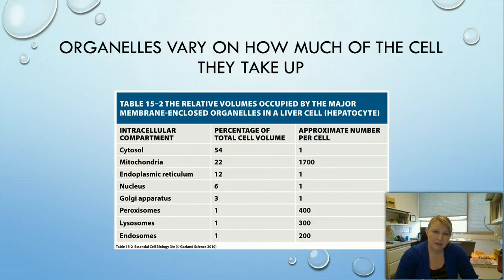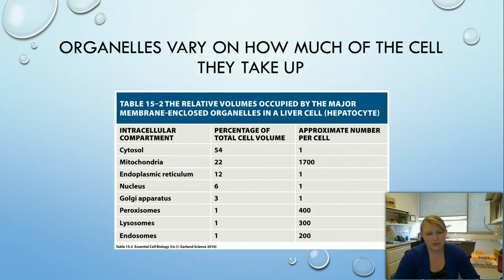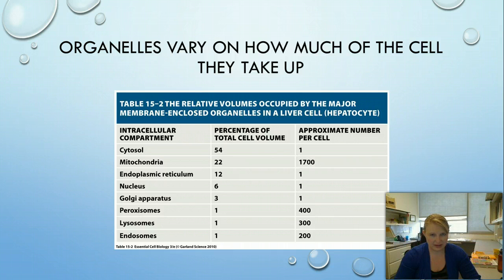We didn't cover mitochondria and chloroplasts here, but you should have a good handle on them from chapters 13 and 14 — refer back if needed. It's important to see how all these organelles occupy various parts of the cell. We have one cytosol, one nucleus, one endoplasmic reticulum, and one Golgi, but many copies of the other organelles. The lysosomes, peroxisomes, and endosomes are very small but we have a ton of them, though they still take up very little room compared to the other organelles.